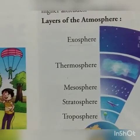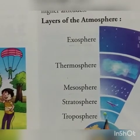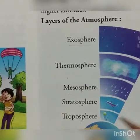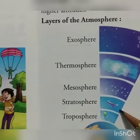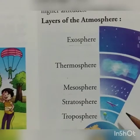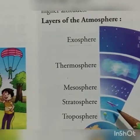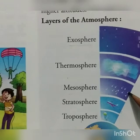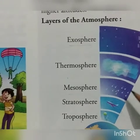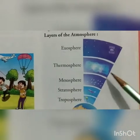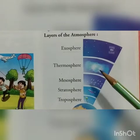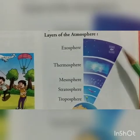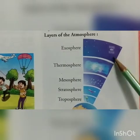To summarize the layers of the atmosphere: the first is the troposphere where all gases are present; the second is the stratosphere where aircraft fly and the ozone layer prevents harmful ultraviolet rays from reaching earth; the third is the mesosphere where meteoroids burn out; the fourth is the thermosphere where space shuttles move; and the fifth is the exosphere, the outermost layer with very little air.